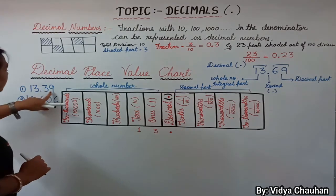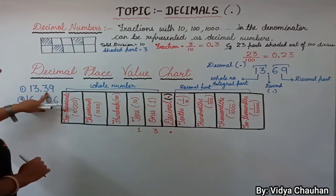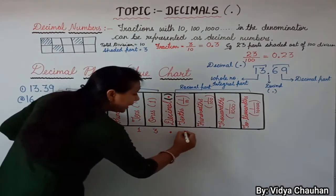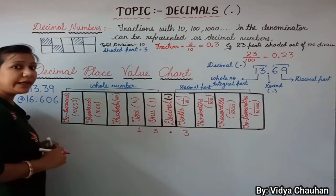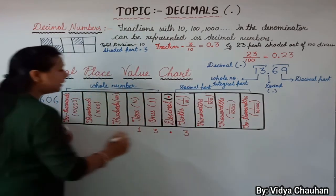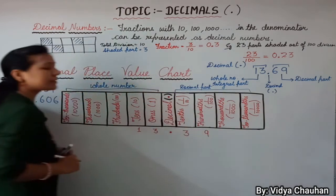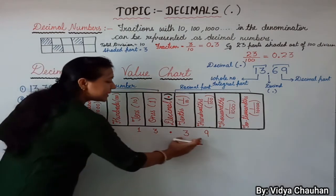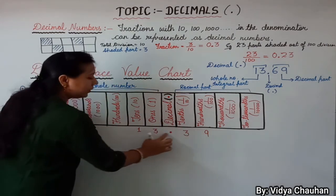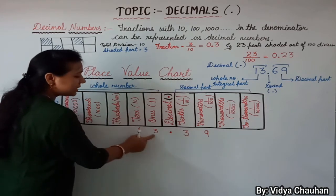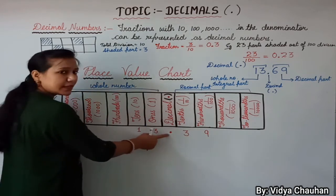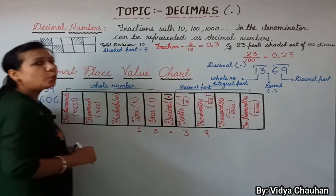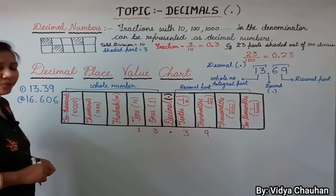Now for the decimal part of 13.39: the digit 3 goes at the tenths place and 9 goes at the hundredths place. So 13.39 is represented with 1 at tens, 3 at ones, then the decimal, then 3 at tenths and 9 at hundredths.